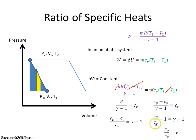And I get cp over cv is equal to gamma. So the ratio of specific heat capacities is the specific heat capacity at constant pressure minus specific heat capacity at constant volume.